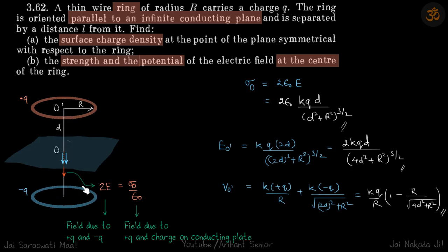So that's why we are able to calculate the potential here by just using this ring. So V_o' is because of this ring, it is k plus q by r. And because of this negatively charged ring, it is k into minus q by root of this distance - because all this negative charge is at a distance, this distance away, which is 2d squared plus r squared, which gives our answer.